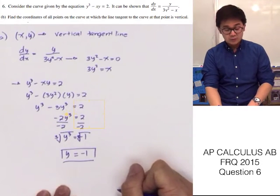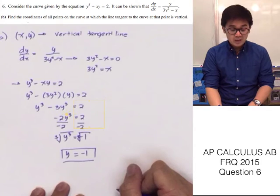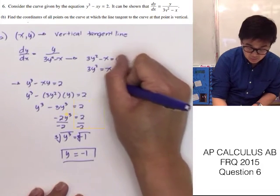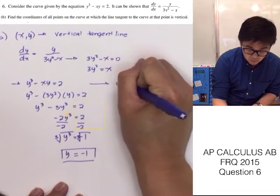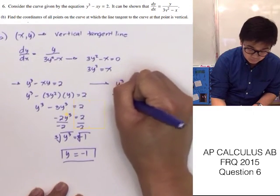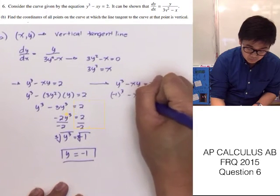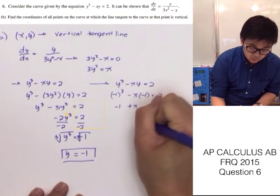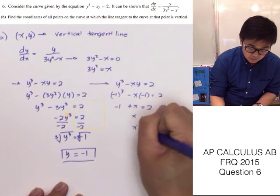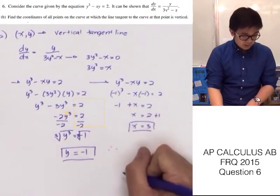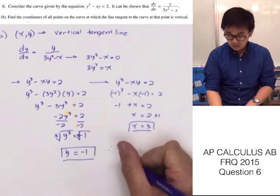This gives the y-coordinate of the point where a vertical tangent line exists on the curve. To find x, we go back to the original function y cubed minus xy equals 2 and replace y with negative 1. Negative 1 cubed equals negative 1 plus x equals 2, so x equals 3. Therefore the vertical tangent line exists at the point (3, negative 1).